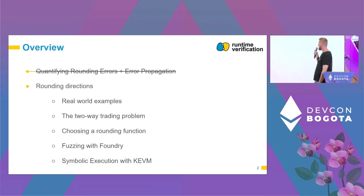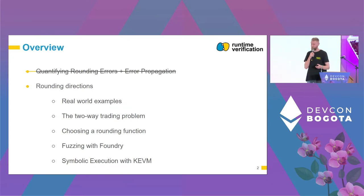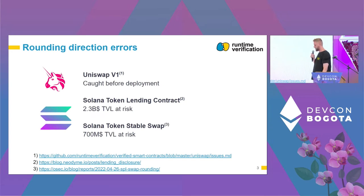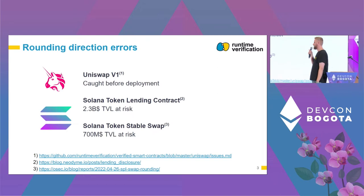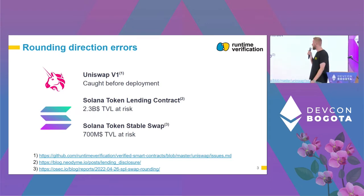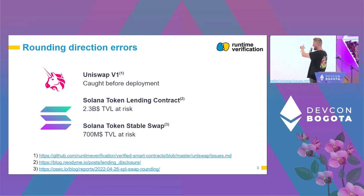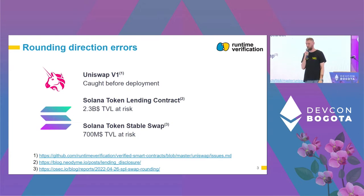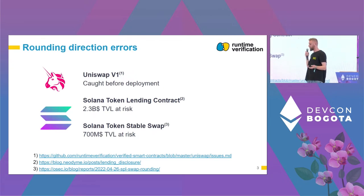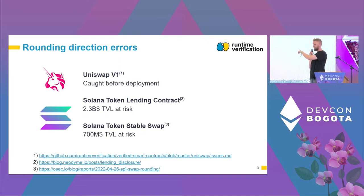Stay with me until we get to this point, then you can make sense of this talk. Rounding errors — we need to accept them; we cannot do exact arithmetic on the blockchain, it's not feasible. We found rounding errors in Uniswap, and luckily this rounding error was fixed before Uniswap v1 was deployed. Then we had two more examples: the Solana token lending contract and the Solana token stable swap.